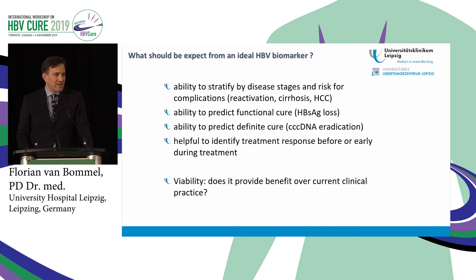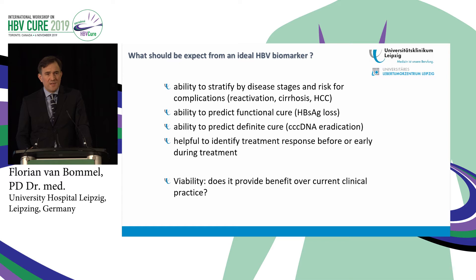An ideal biomarker should have the ability to stratify by disease stages and risk for complications such as reactivation, cirrhosis, or HCC. There should be an ability to predict functional cure — HBsAg antigen loss — and maybe the ability to predict definite cure. It should be helpful to identify treatment response before or early during treatment, especially for novel treatments that are to come. And viability: does it provide benefit over current clinical practice?